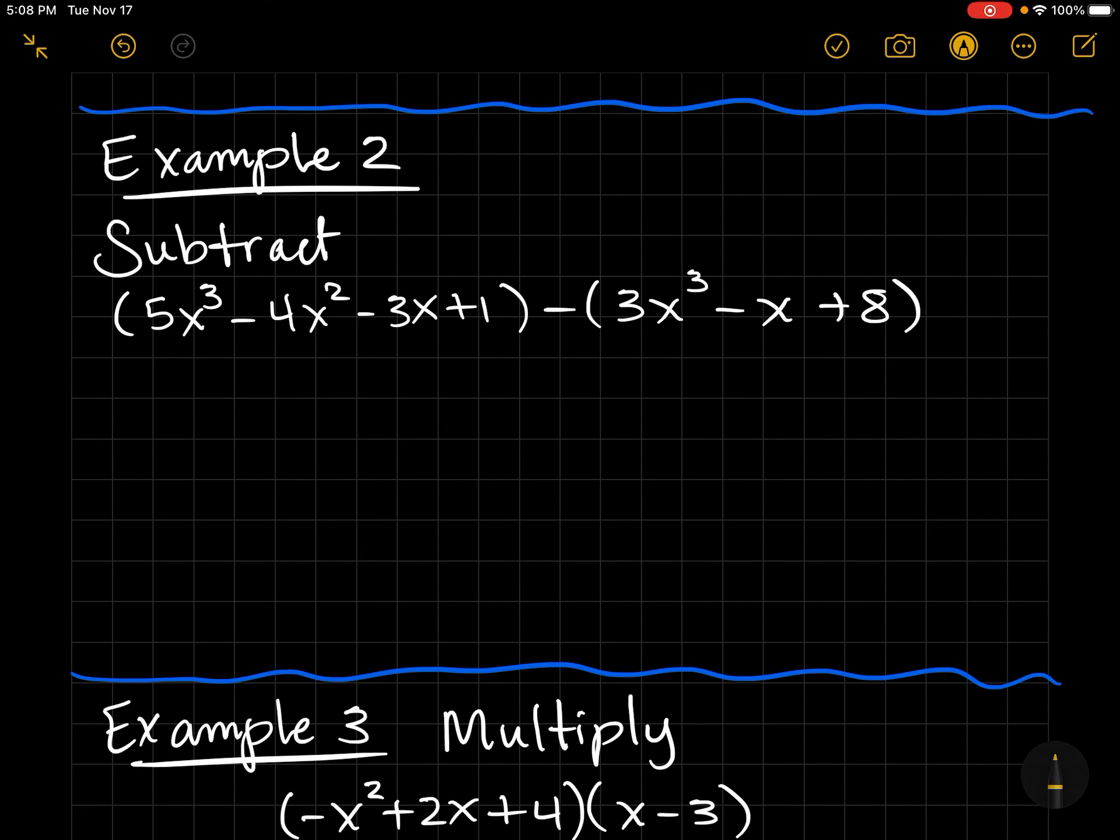For example 2, it's almost the same except we want to distribute that negative sign. Okay, so we have 5x³ - 4x² - 3x + 1.